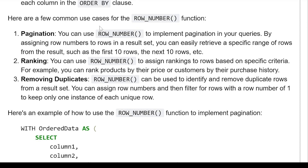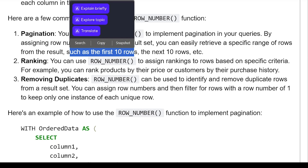Some common use cases of the row number function. First is pagination. You can use the row number function to implement pagination in your queries. By assigning row numbers to the rows of the result set, you can easily retrieve a specific range of rows, such as the first ten rows, then the next ten rows, and so on.